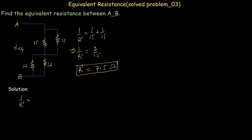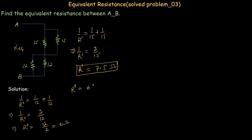The equivalent resistance of the second pair of parallel resistors: 1 divided by R' equals 1 divided by 12 plus 1 divided by 12. So 1 divided by R' equals 2 divided by 12, giving R' equals 12 divided by 2, which equals 6 ohms. So the equivalent of these two resistors is 6 ohms.